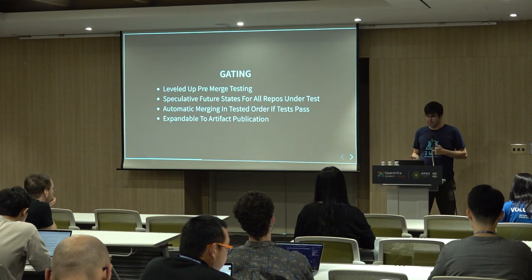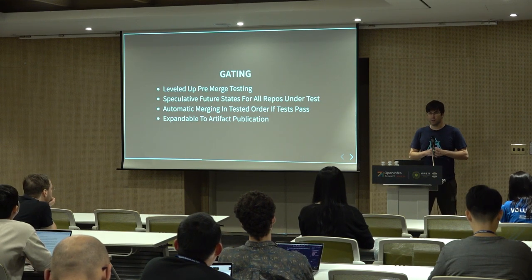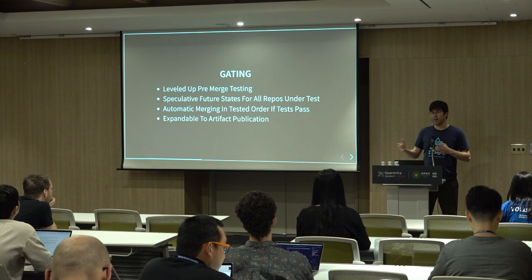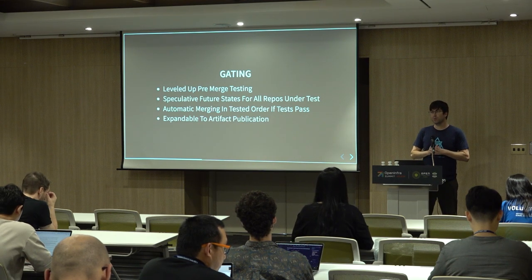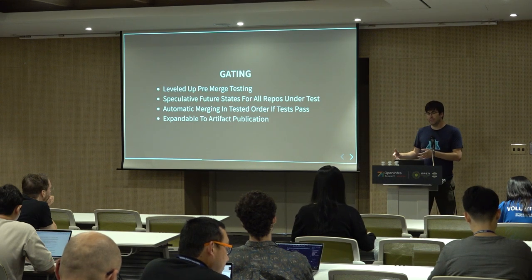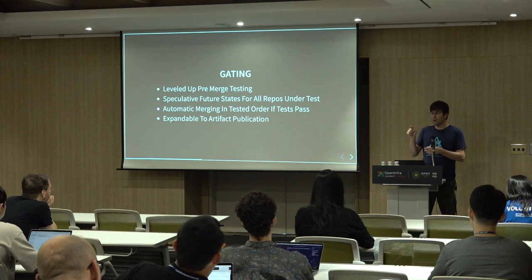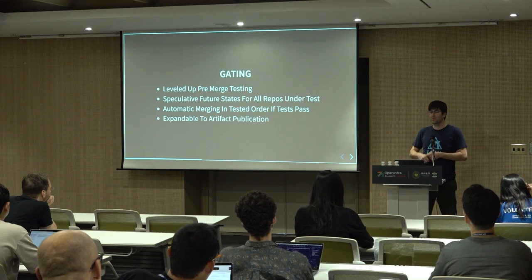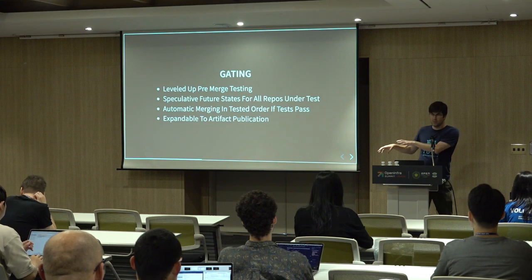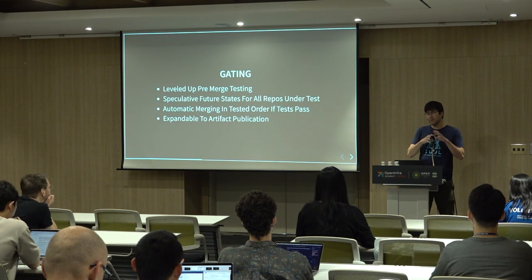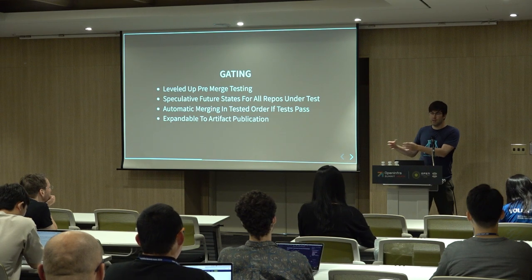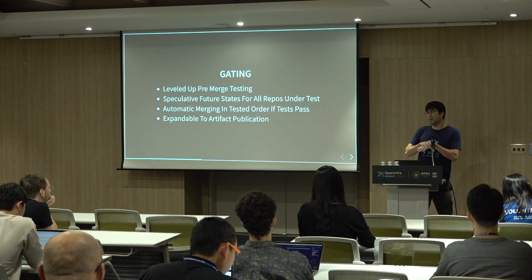And that's where gating comes in. Gating is leveled-up pre-merge testing — we're testing our code before it merges. To make that scale, you need to run tests in parallel. To do that, Zuul builds out speculative git states, pretending that code is merged in a specific order — the order in which human code reviewers click the approve button. Zuul will build out these speculative git states in that order, test that future state, and if it passes, merge the code automatically in the same order. That allows us to start tests in parallel.